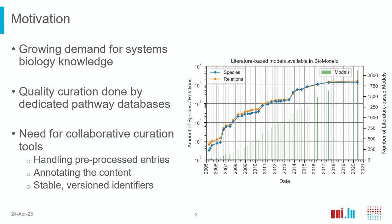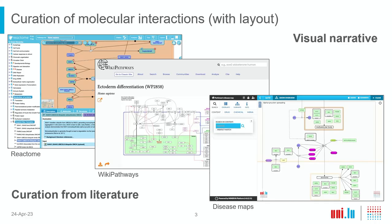Recently, as was mentioned in previous talks, opening the curation to the community was actually helpful. What we are working on is a tool or set of tools that supports that — a tool that can handle preprocessed entries, machine learning text-mined entries, that allows annotating the content and supports stable version identifiers.